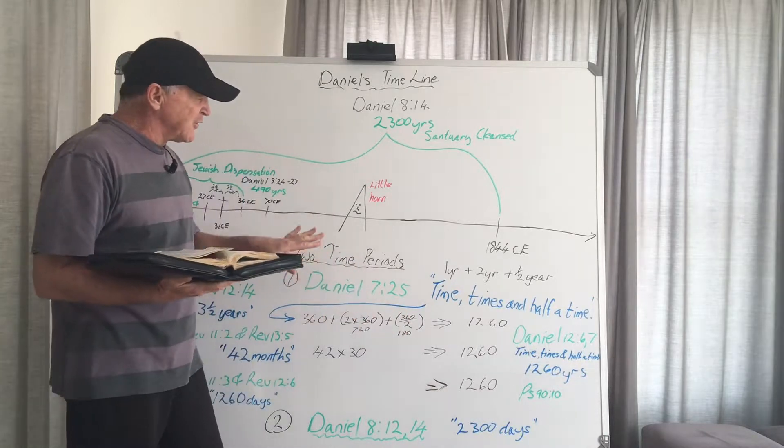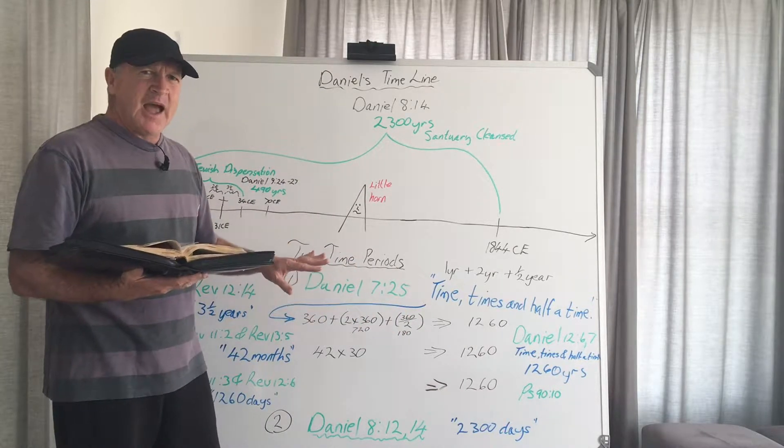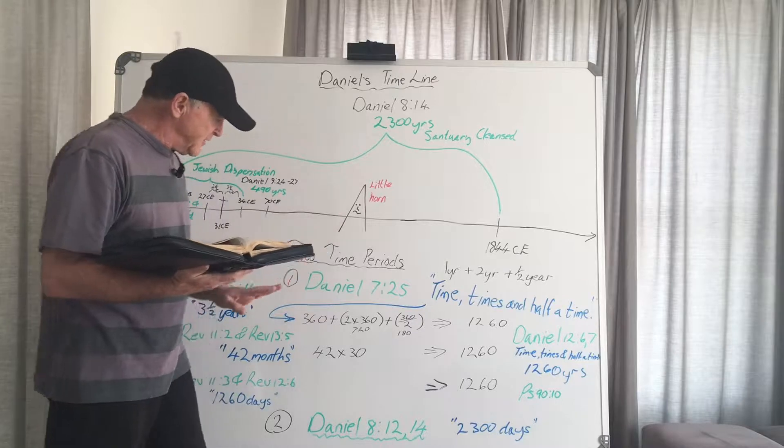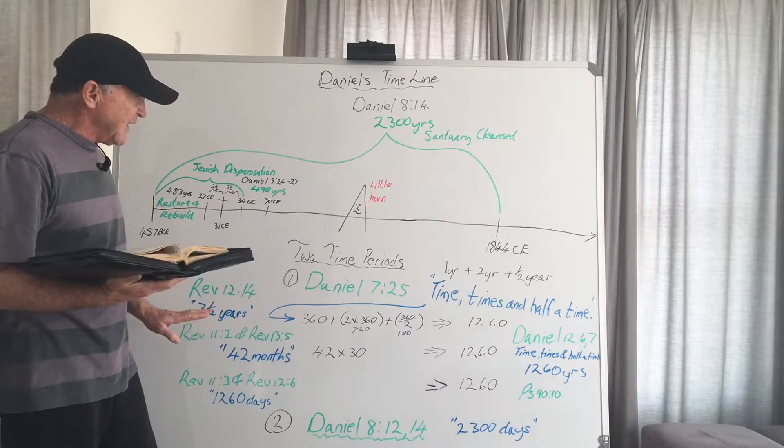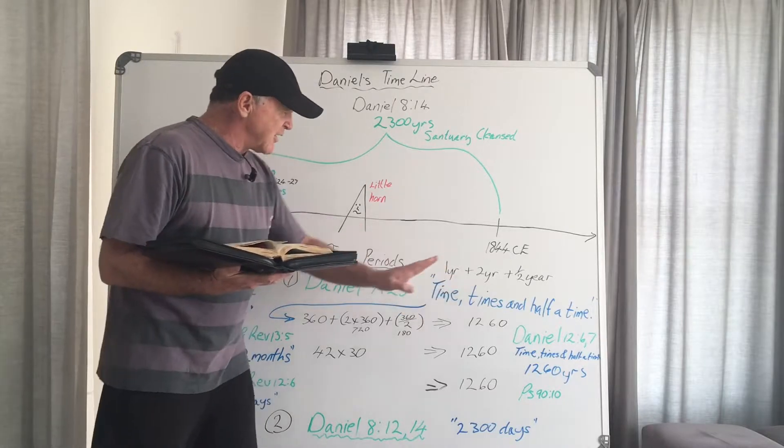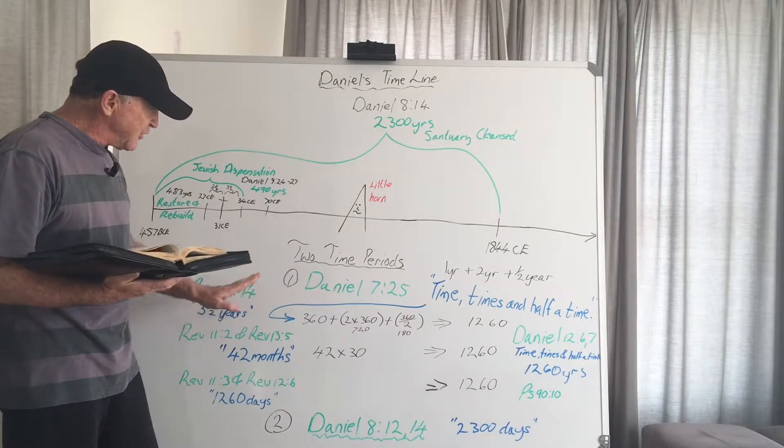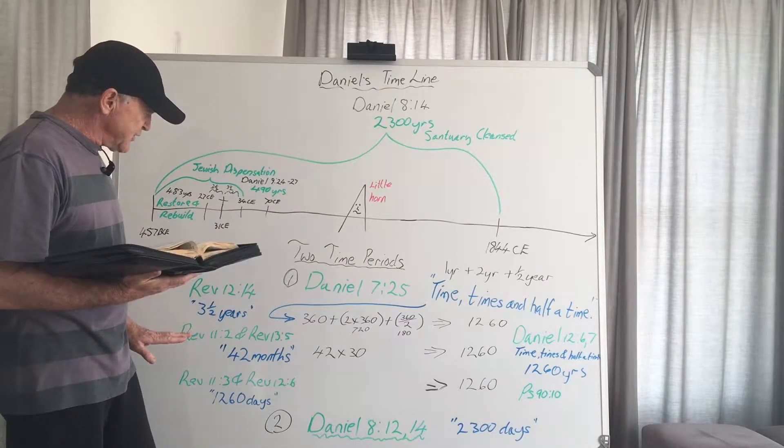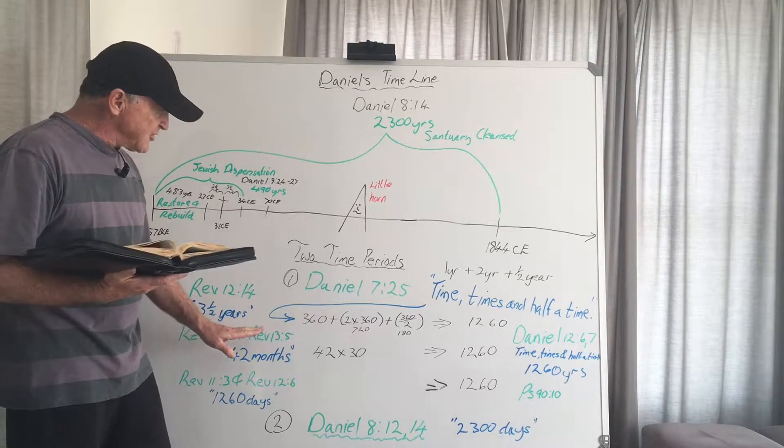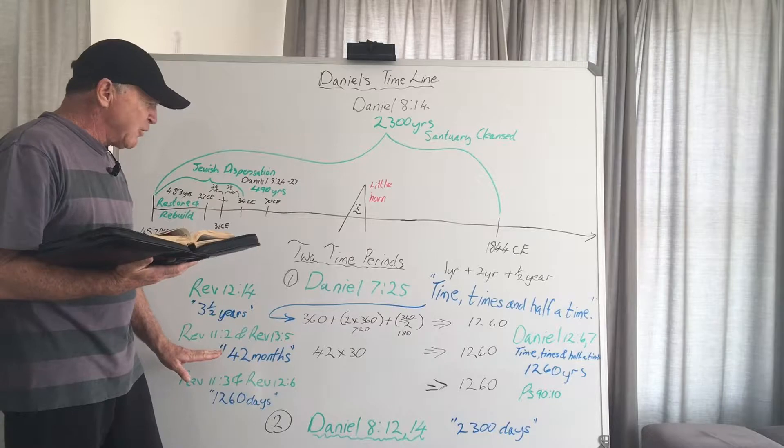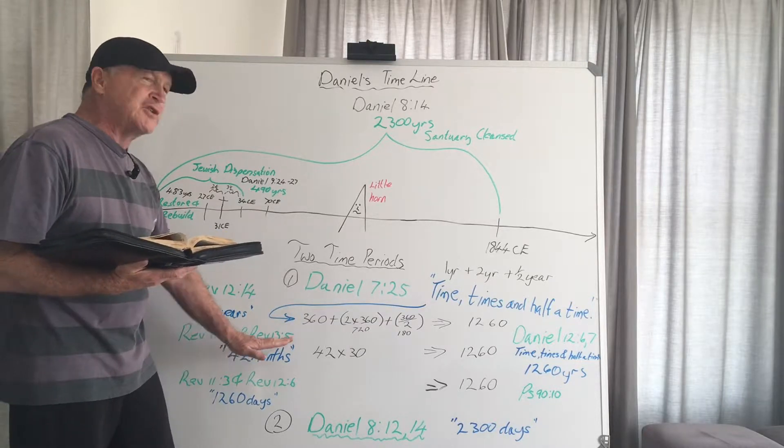Today I want to focus on the first period of time, and you will recall how that we found recorded in Revelation chapter 12 verse 14 the fact that we have the time, times and a half a time, and I've just put it down as three and a half years. We also saw how that in Revelation chapter 11 verse 2 and Revelation chapter 13 verse 5 we are drawn to the 42 months.